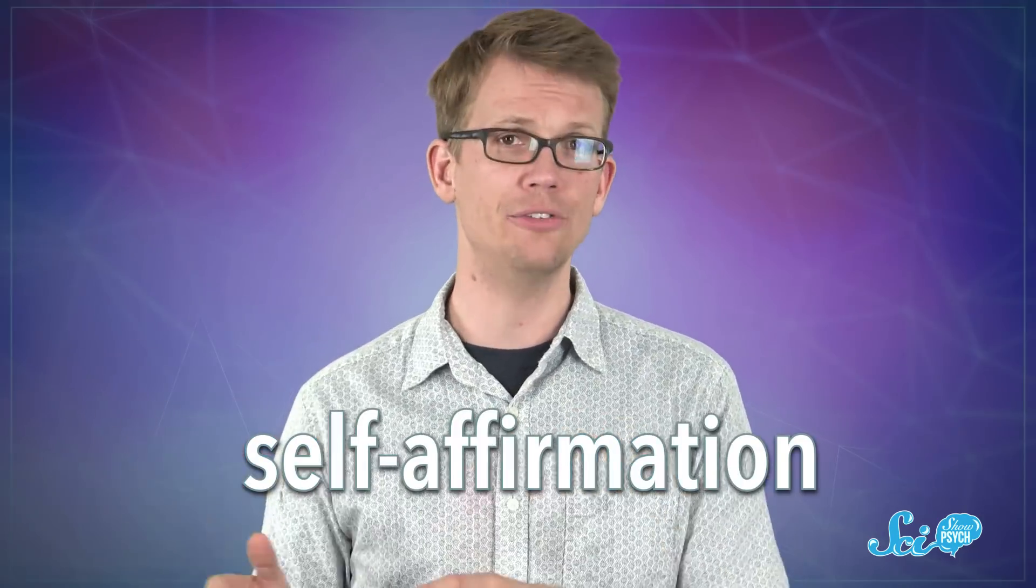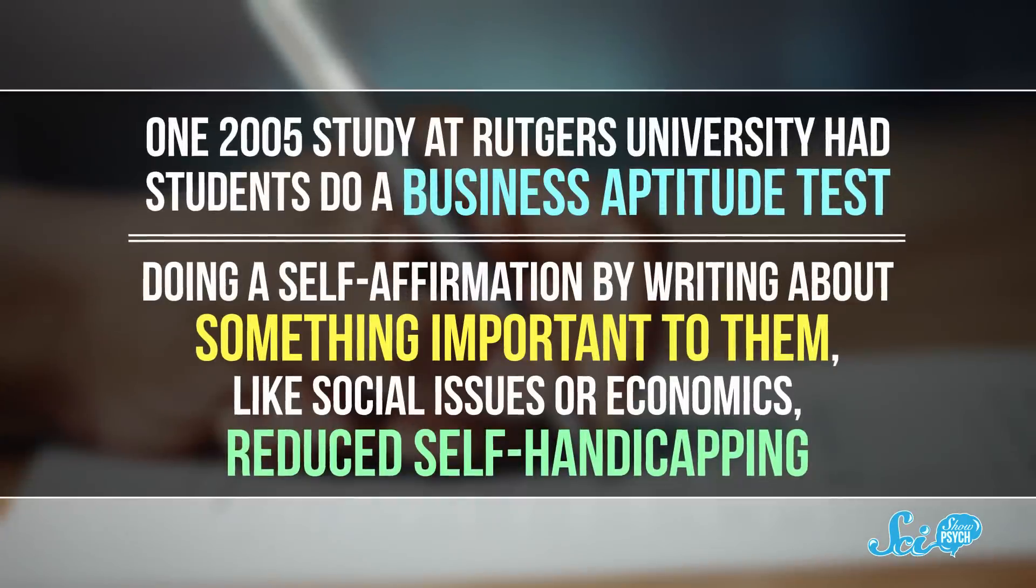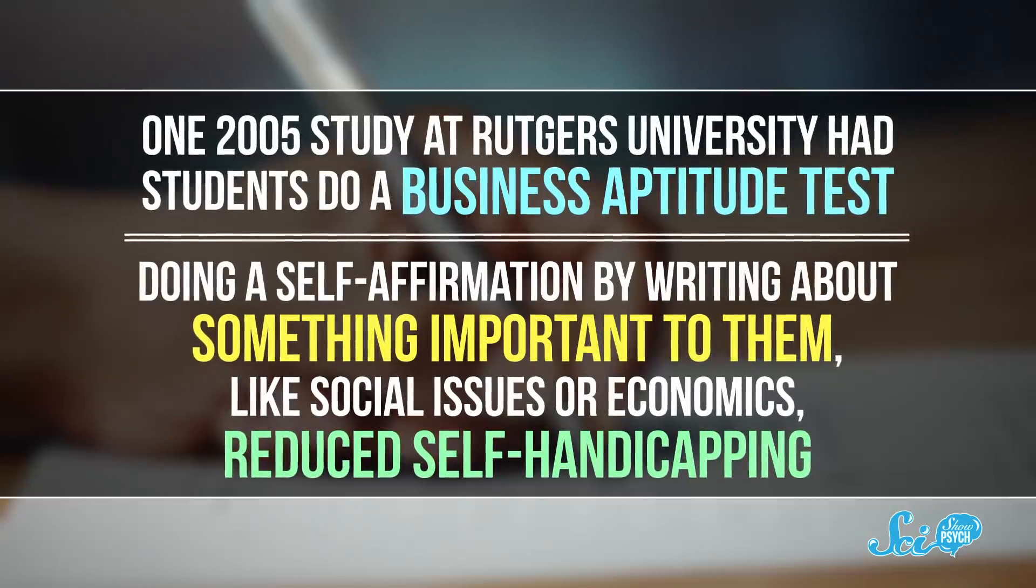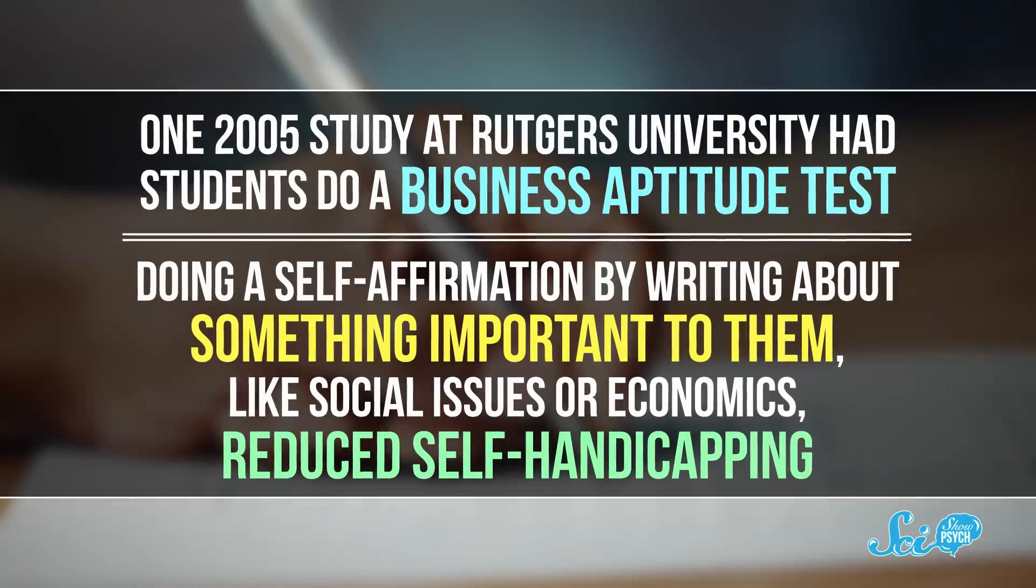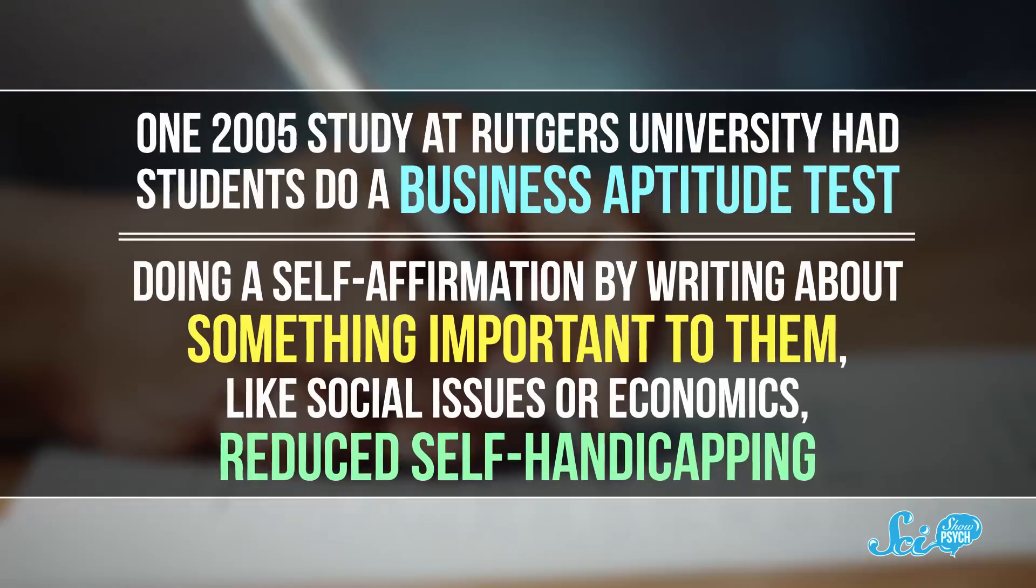And self-affirmation might also help. Thinking about something that matters to you, or how you've done well at something else in the past, can help you feel better and not self-handicap as much. So just look in the mirror and say, Hank, your eyebrows look great. For example, one 2005 study at Rutgers University had students do a business aptitude test. Doing a self-affirmation by writing about something important to them, like social issues or economics, reduced self-handicapping.